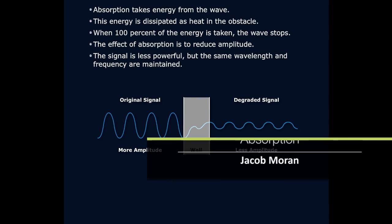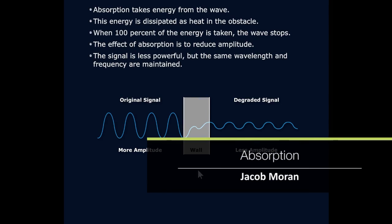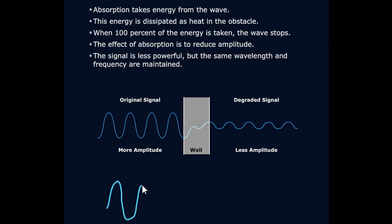In addition to free path loss, which is simply the sine wave occurring with a particular signal, essentially losing amplitude over time, not changing the wavelength, not changing the frequency, but simply losing strength over time, that's free path loss.